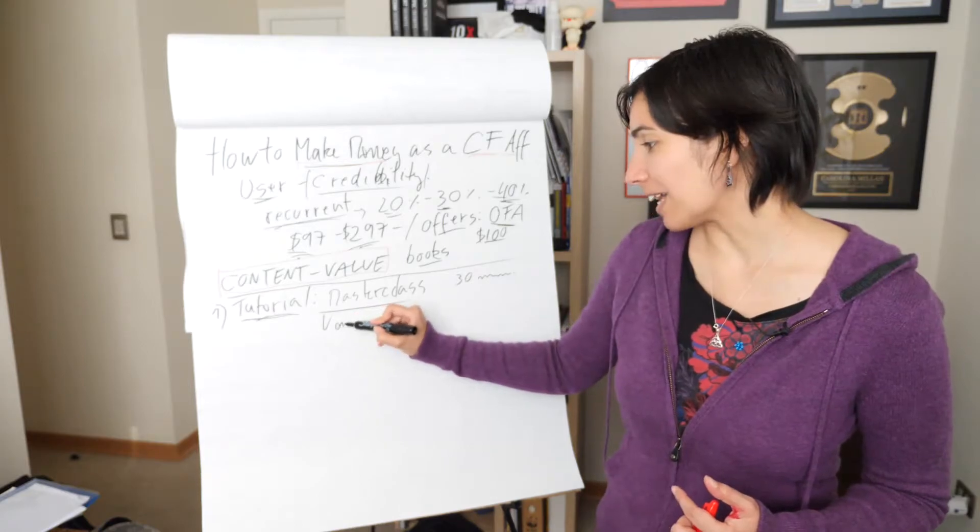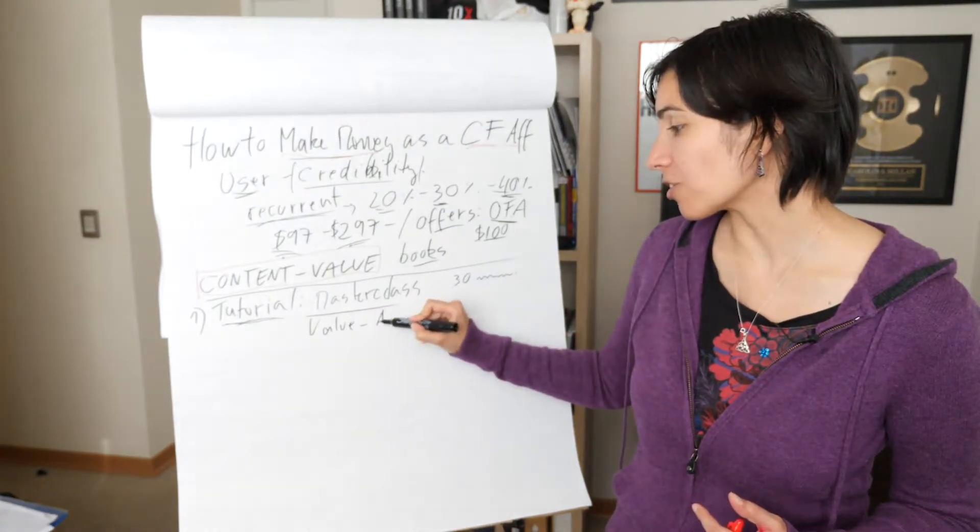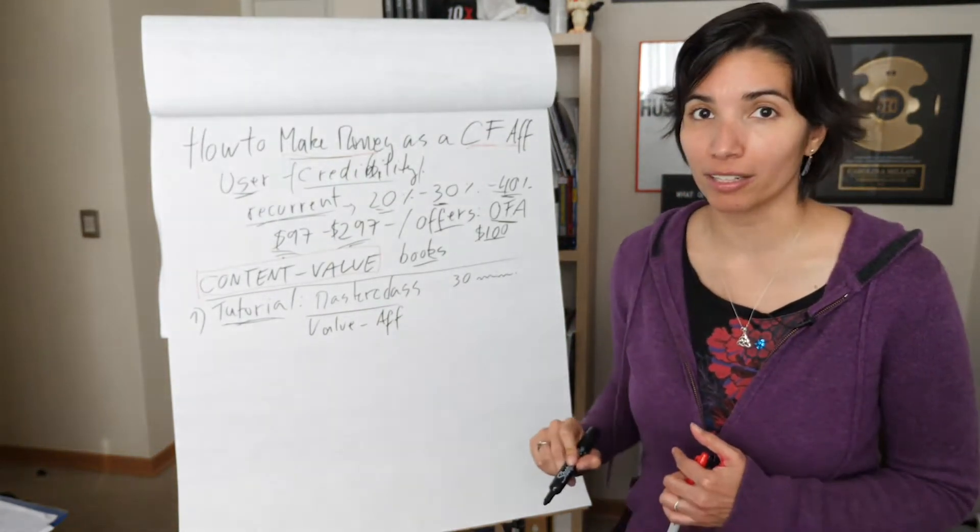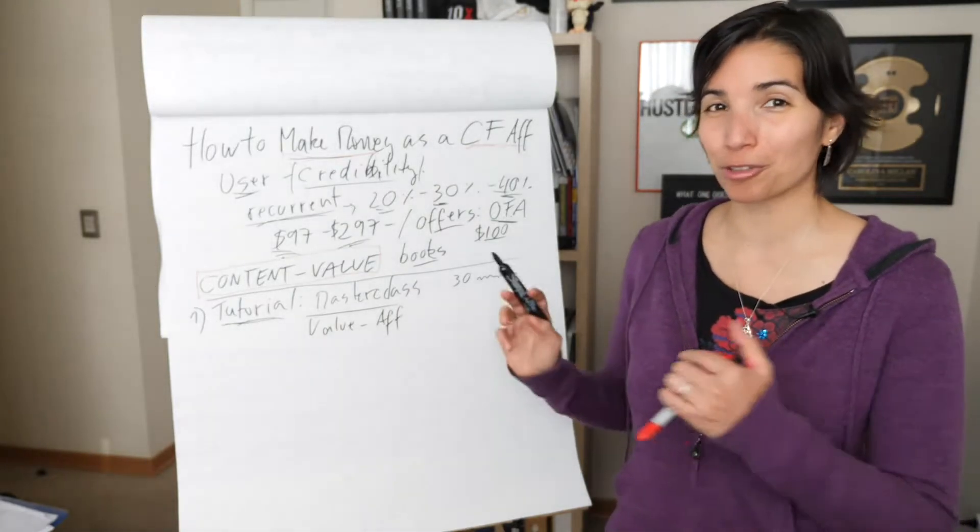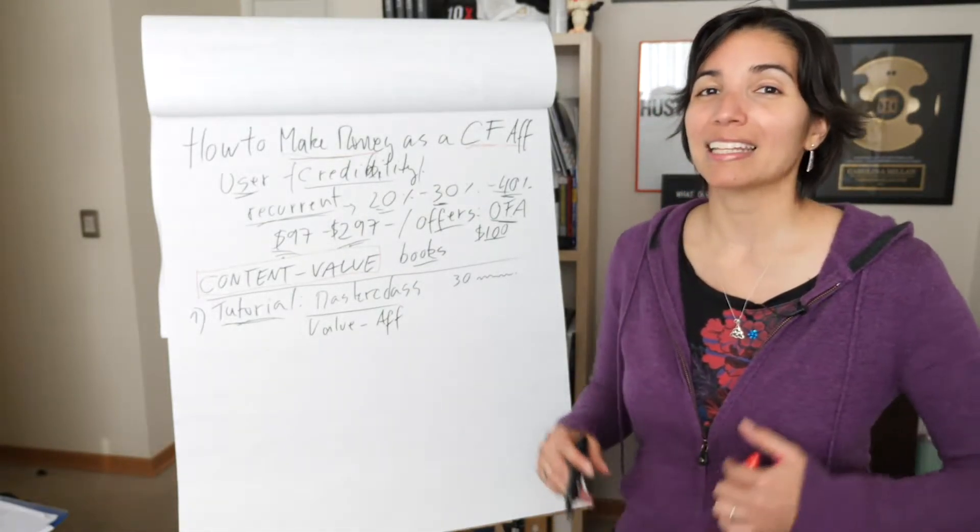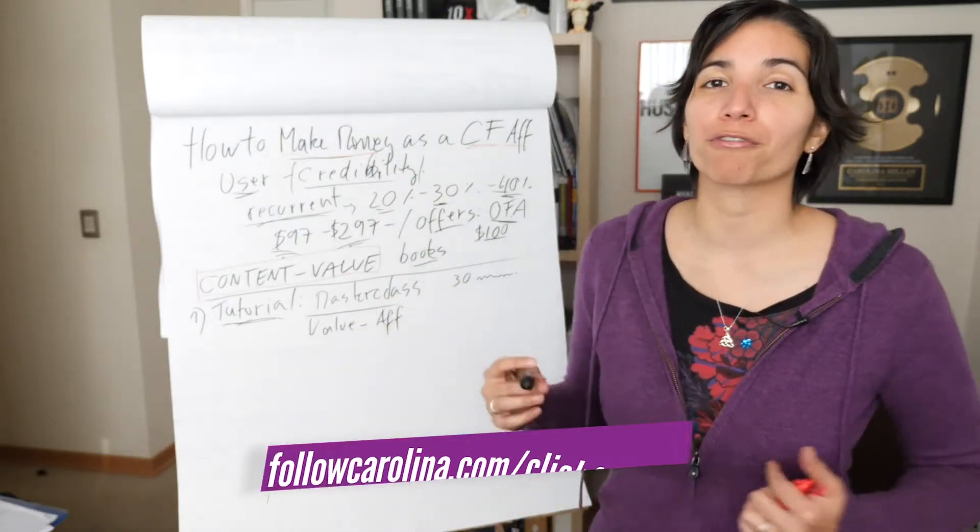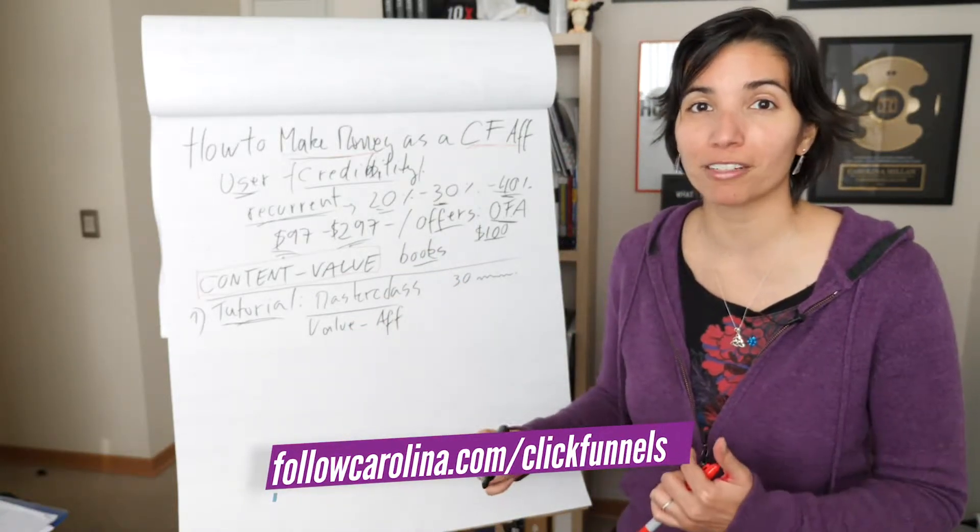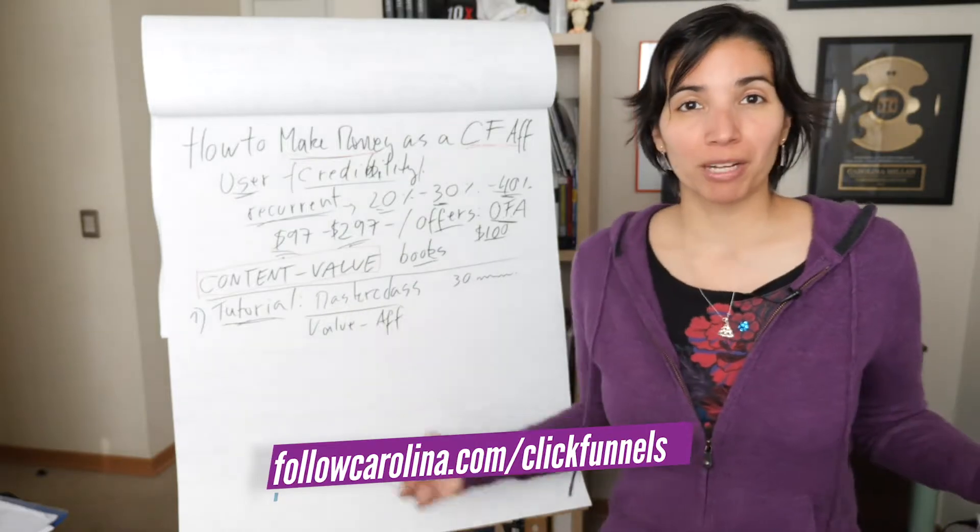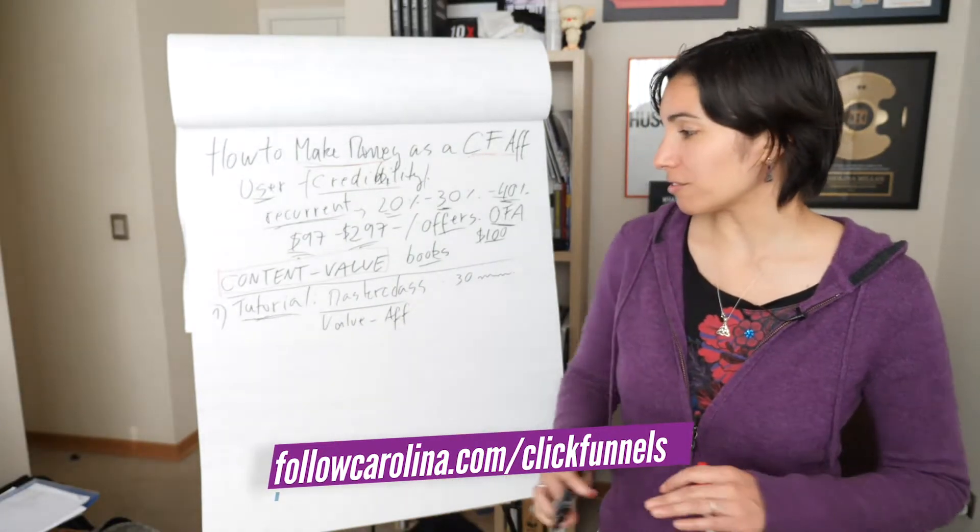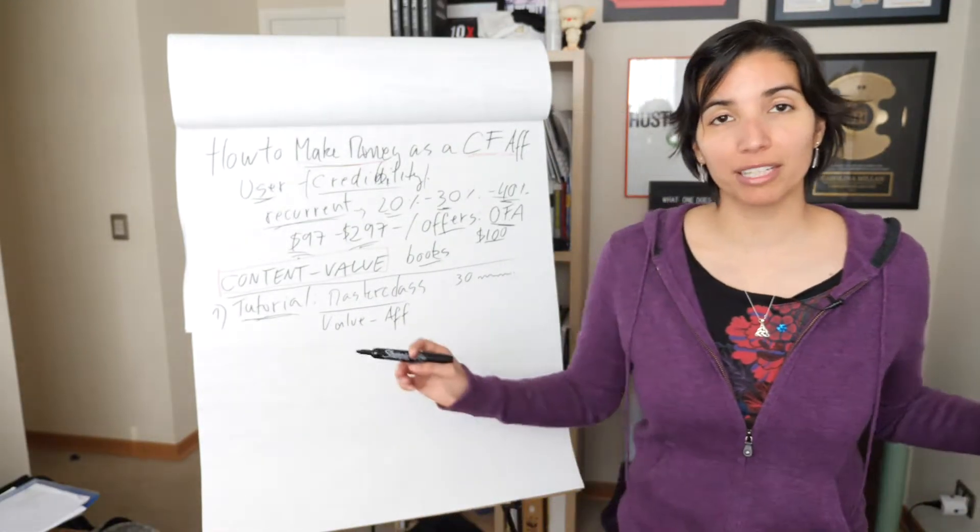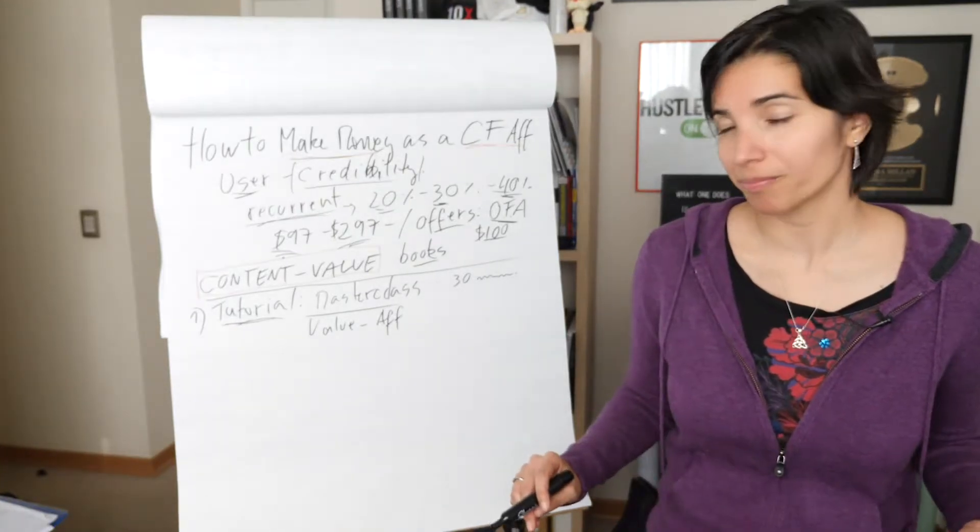So you can create a tutorial around whatever offer you want to promote. What this does is it'll add value. You're going to mention your affiliate link early on. When you're starting the tutorial, you introduce yourself. You tell people what to expect. And then immediately you tell them to sign up for the free 14-day trial for ClickFunnels because you're going to teach them how to use it. And you can teach them like the simple basics. How to create the first funnel, very simple, and take it from there.